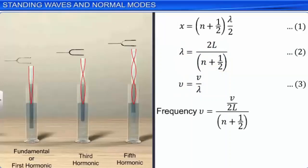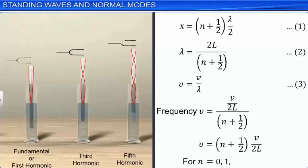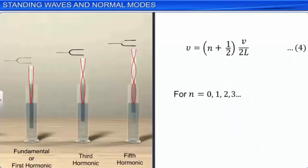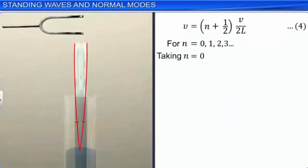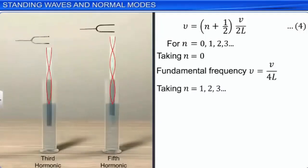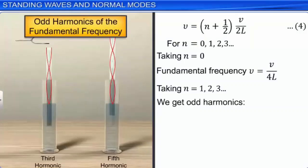Taking n = 0, the fundamental frequency ν = V/4L. Taking n = 1, 2, 3, we get odd harmonics of the fundamental frequency — that is, 3V/4L, 5V/4L, and so on. The air column open at one end resonates with frequencies given by equation 4. When a pipe is open at both ends, there will be antinodes at both ends and all harmonics will be generated. This can be compared to waves produced in a string fixed with rings looped to rods at both ends.